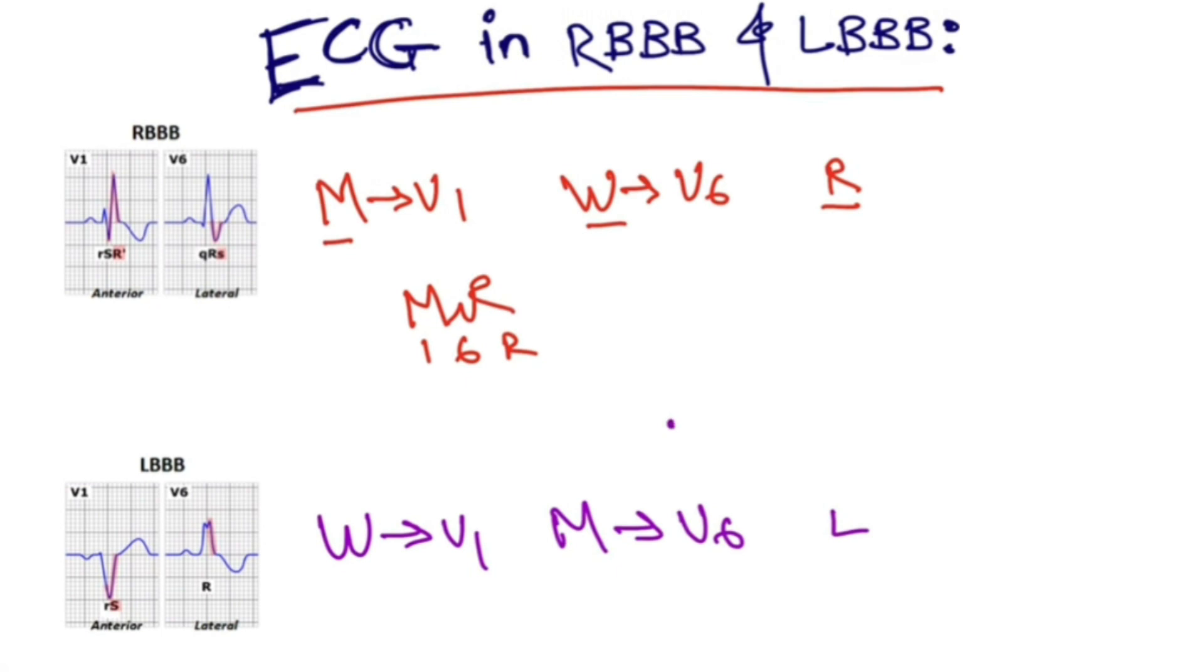branch block just write W-M-L and label it as 1, 6, and left bundle branch block. So guys,